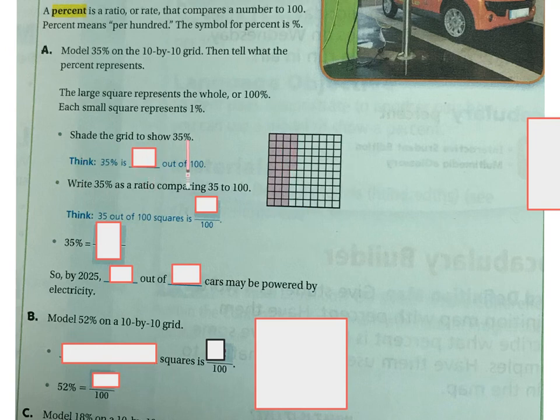So if I'm going to shade the grid to show 35%, I've got to think 35% out of 100 is 35 out of 100. So if you can see here, I've shaded 35 squares red out of the 100.